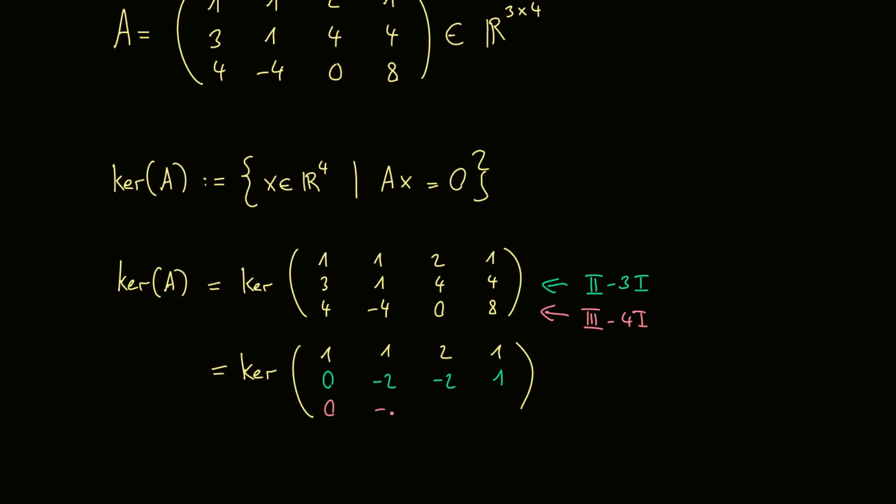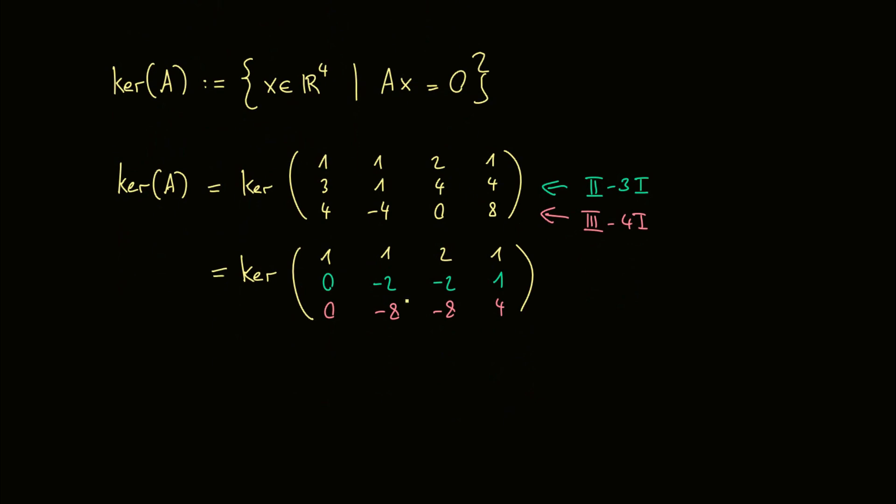So third row minus 4 times the first row, and then we have the 0 as wanted, and minus 8, so minus 4 minus 4, and minus 8 as well, and plus 4 here. Okay, now we have the zeros in the first column, and we want to do the same in the second column as well. So we want to create a 0 here. As you can see, this is very easy now. So the new third row here gets just 4 times the new second row and just minus again. And then we get 0, 0, 0 and 0. But of course this was obvious since the third row here is just a multiple of the second row.